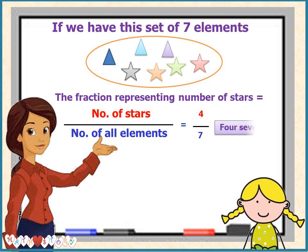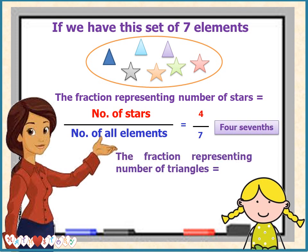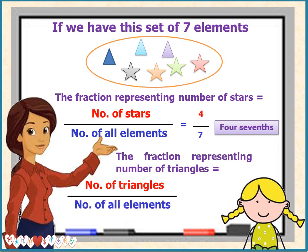The fraction representing the number of triangles equals the number of triangles over the number of all elements, which equals three over seven, or three sevenths.